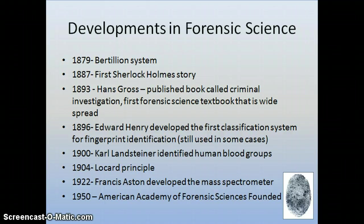In 1900, Karl Landsteiner identified human blood groups — the A, B, O, and AB blood groups — providing a way to differentiate blood found at a crime scene or on a murder weapon from a victim or suspect. Locard's exchange principle is from 1904 and will be discussed in detail later as one of the most important concepts in forensics. In 1922, Francis Aston developed the mass spectrometer, an extremely important piece of equipment used in toxicology, determining blood alcohol content, and differentiating between different kinds of trace evidence.